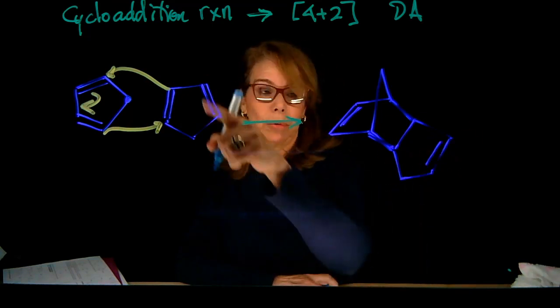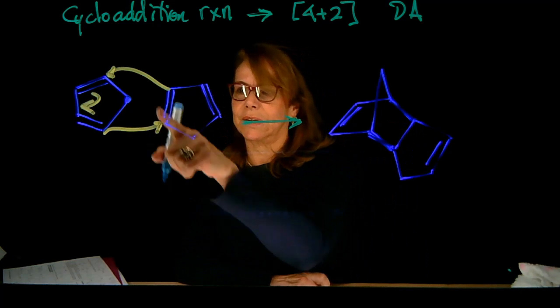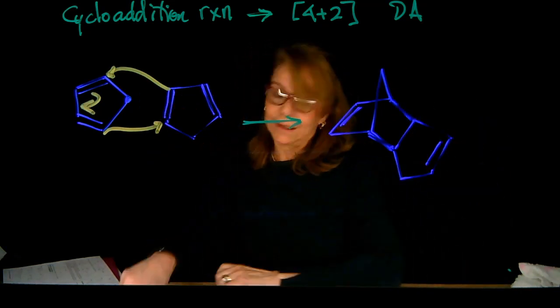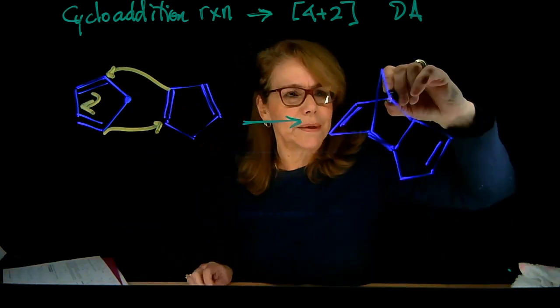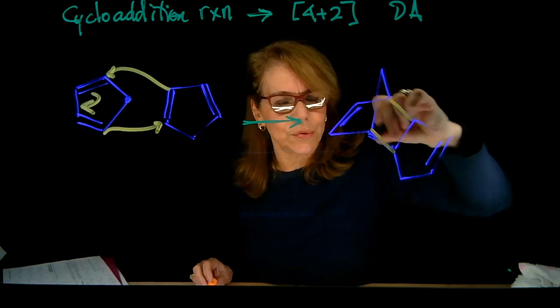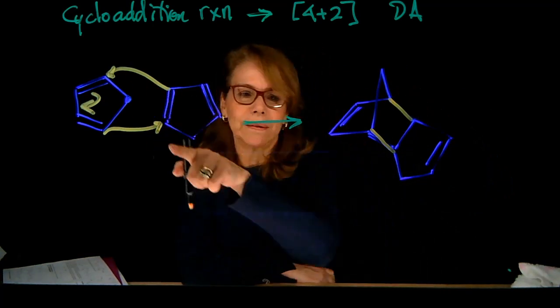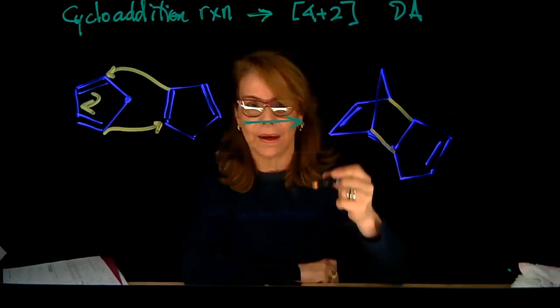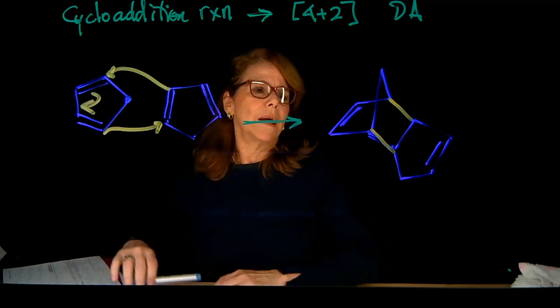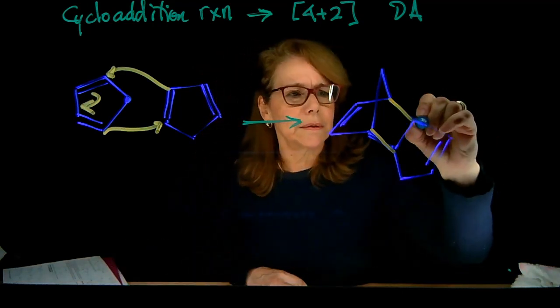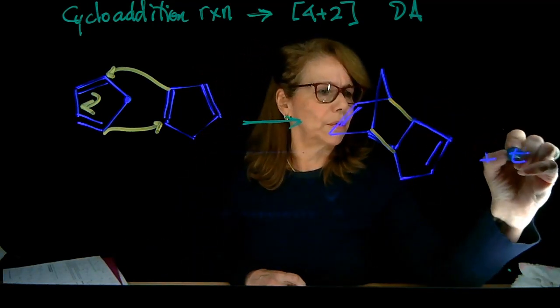This double bond we didn't use. So the arrows here represent - let's make it the same color here, better - the 2 new sigma bonds that we're representing there with the arrows. And now we will have this product, dicyclopentadiene.